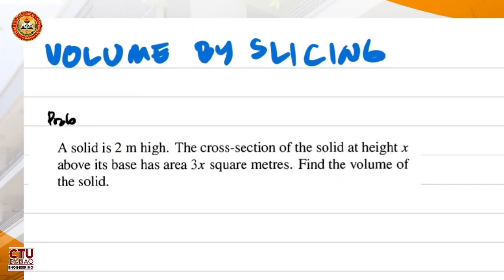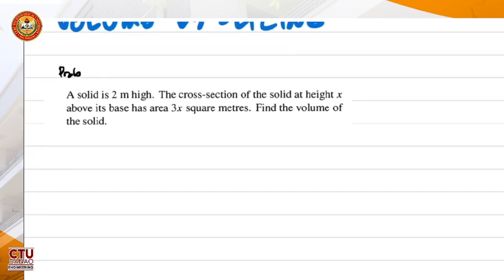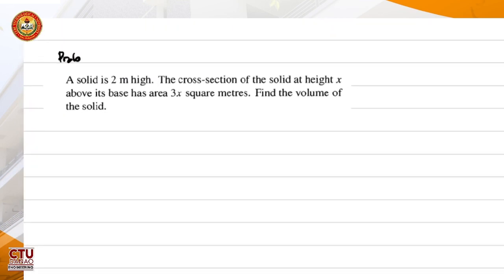Let's read the problem first. A solid is two meters high. The cross section of the solid at height x above its base has area 3x square meters. Find the volume of the solid. So first we need to visualize the solid. At the base where height is zero, the cross-sectional area would also be zero, meaning it's a single point at the base.